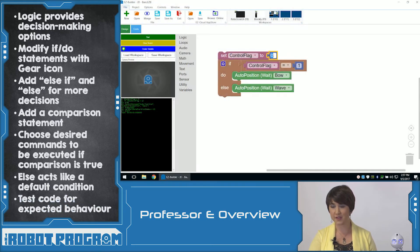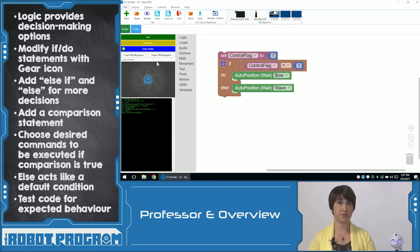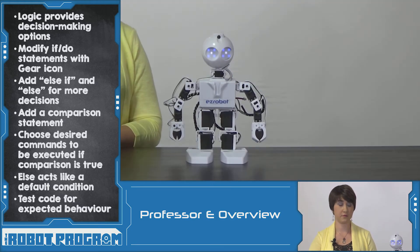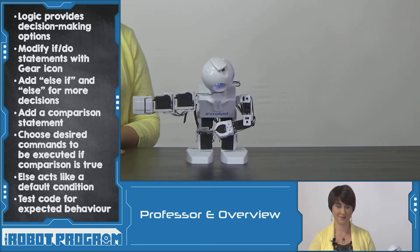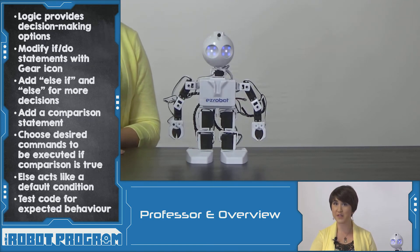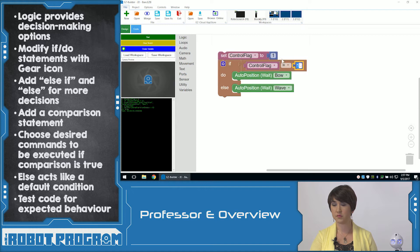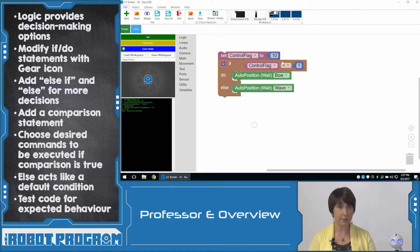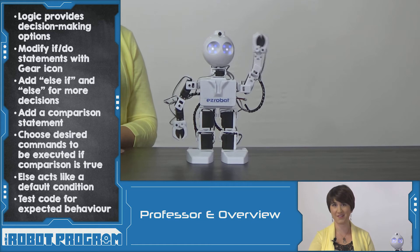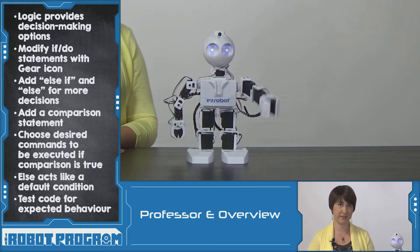Let's set ControlFlag to one. Now we expect him to bow. There we go. So we're using our variable called ControlFlag to execute two different options for the robot. Let's change ControlFlag to ten. It's not equal to one, which means it does the else — so he should wave. Perfect. Our code does exactly what we want it to do.